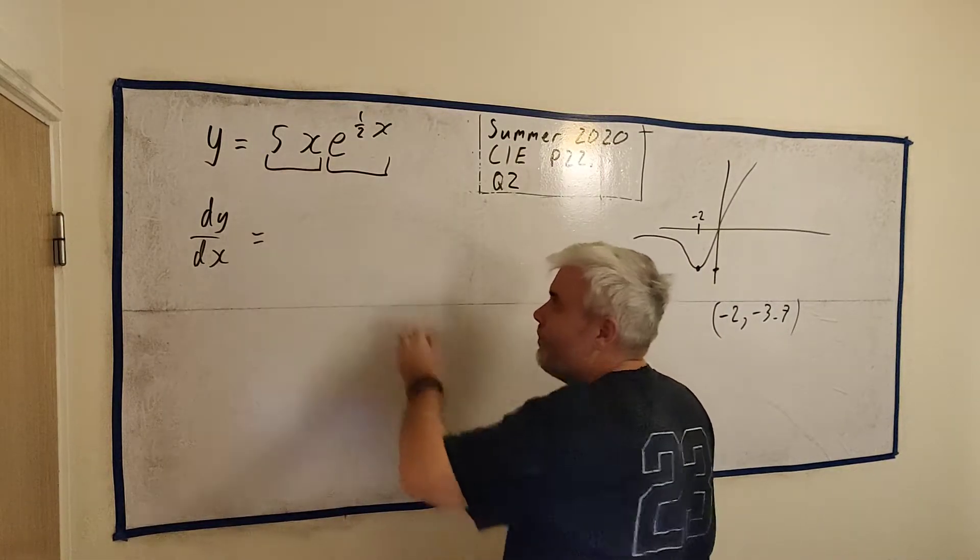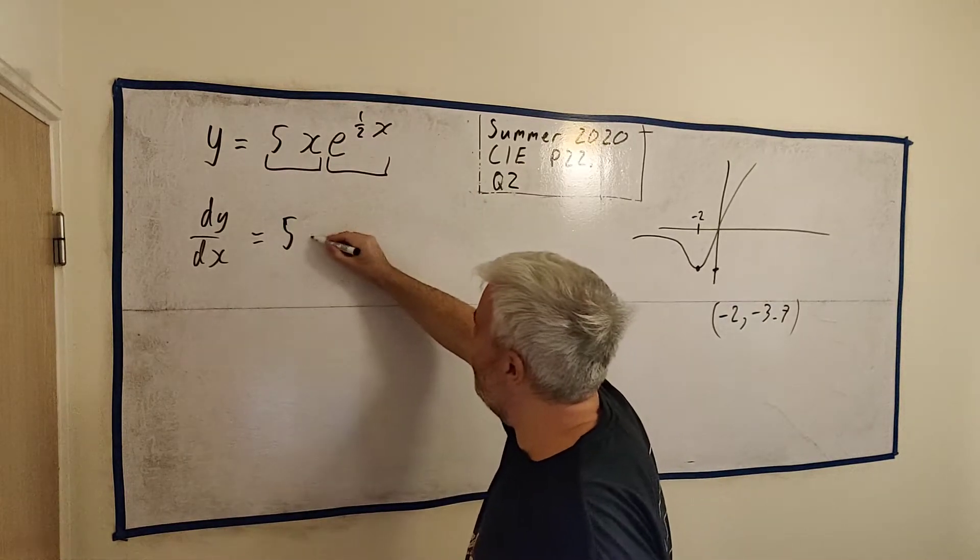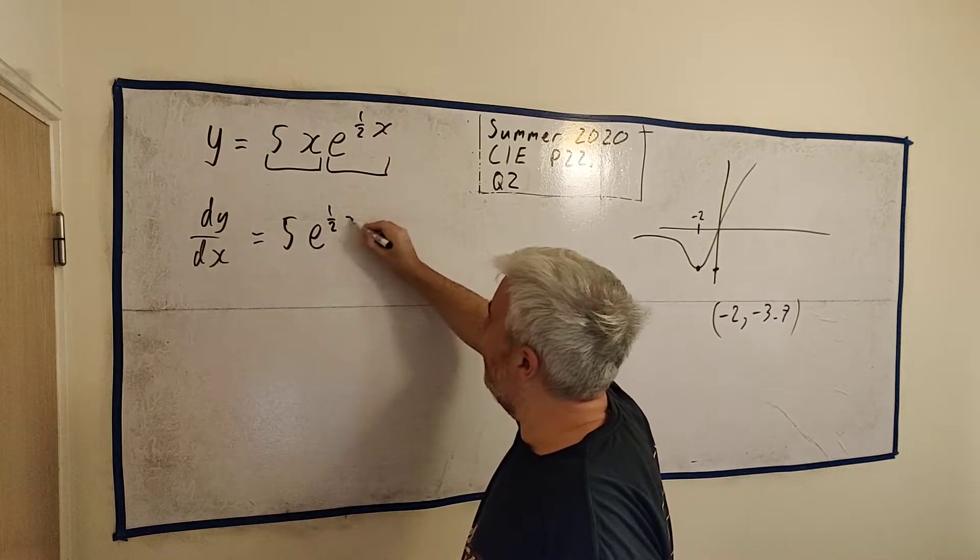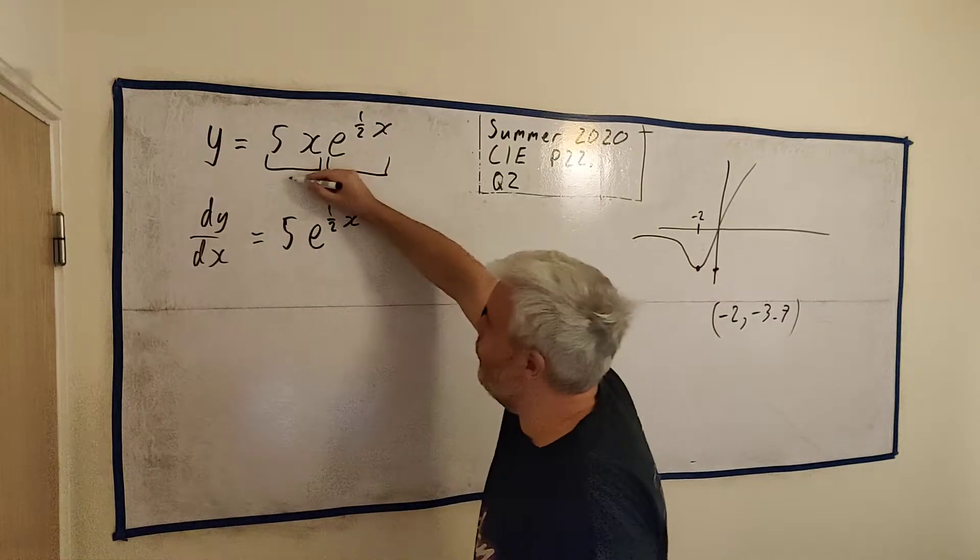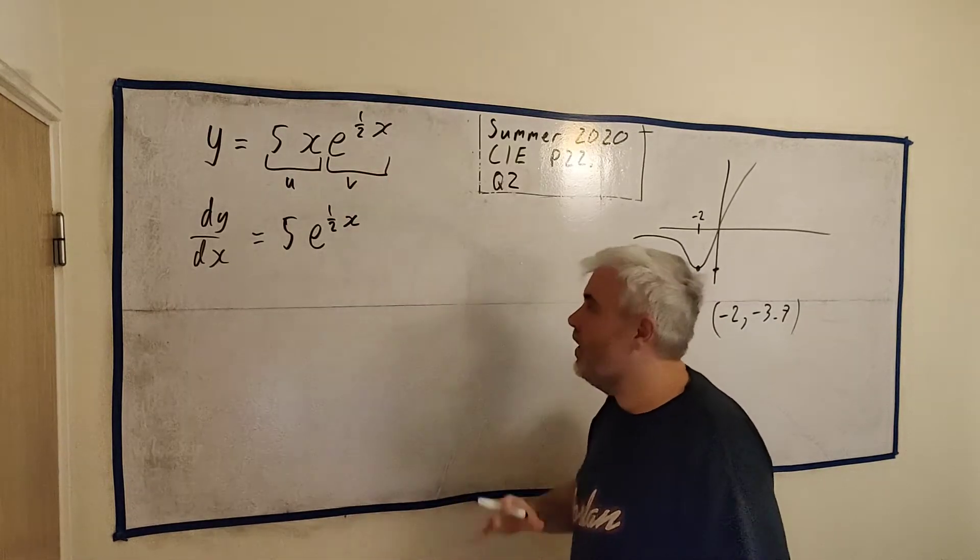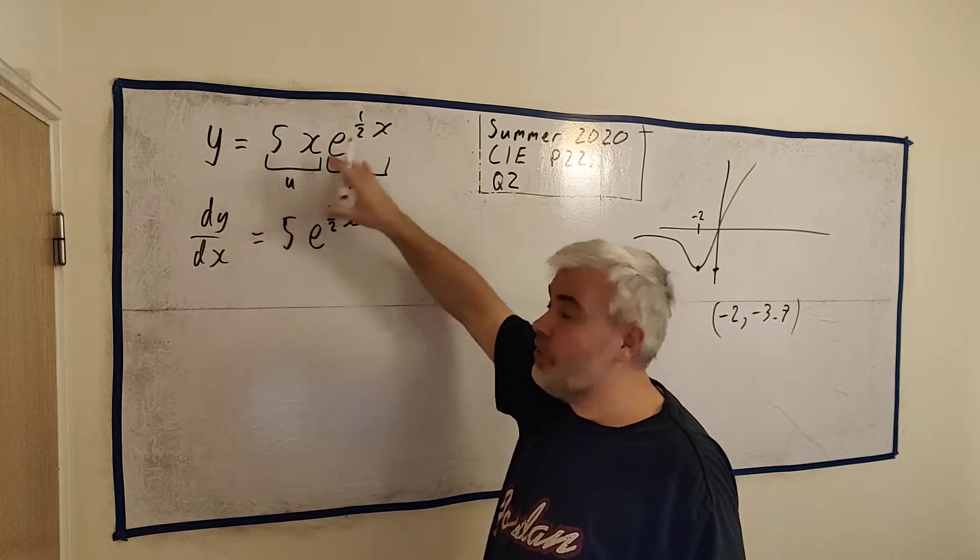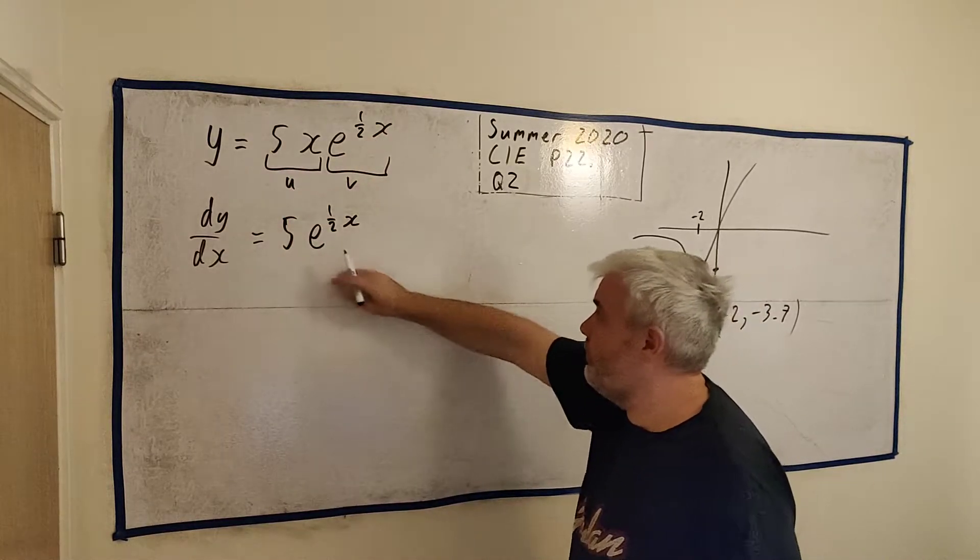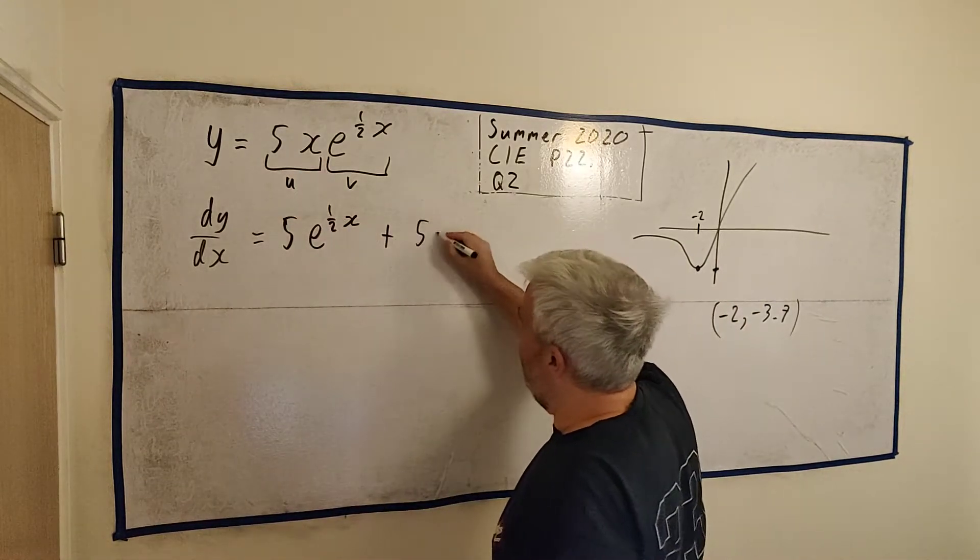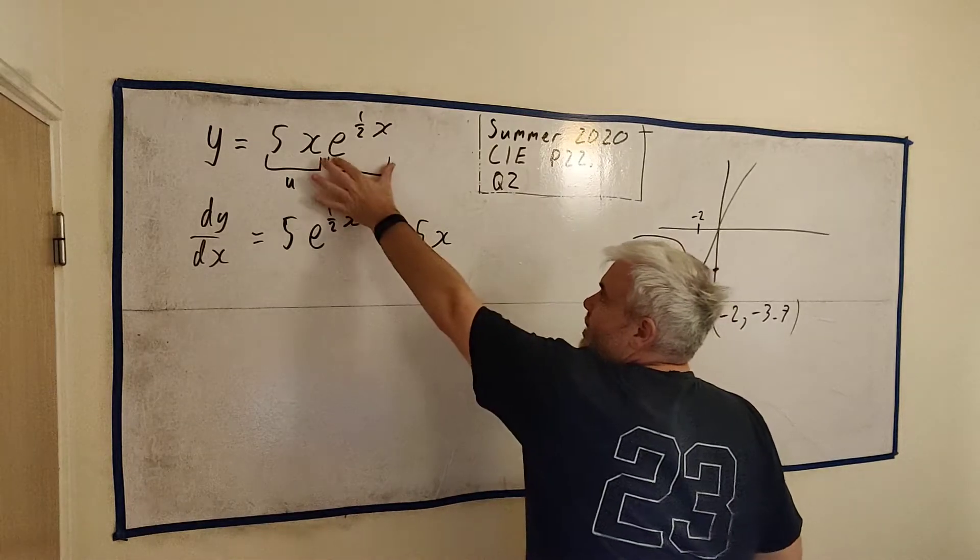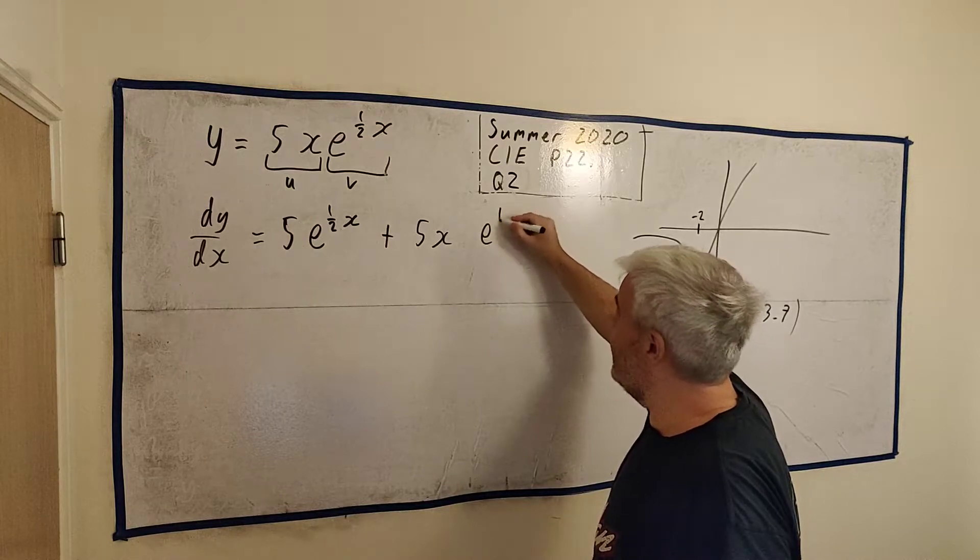We'd have to break this into two parts because each of these parts have x's in them. So we can't do it as one thing. And one of those parts is an exponential. So you need to do the product rule. Let's differentiate the first one. We'll get five and multiply that by the second part left alone. So e to the half of x. This is your product rule.